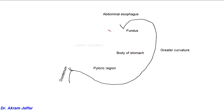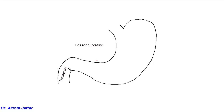The esophagus and the lesser curvature of the stomach, first part and second part of the duodenum here. Attached to the lesser curvature of the stomach and first part of the duodenum is the lesser omentum, and this lesser omentum is attached on the other side onto the visceral surface of the liver.